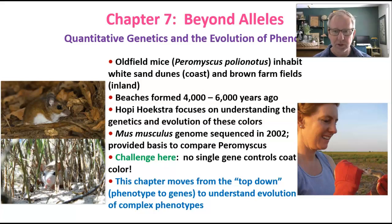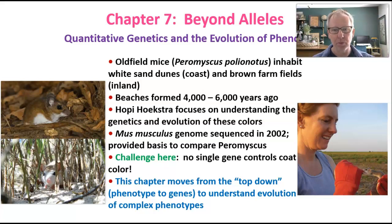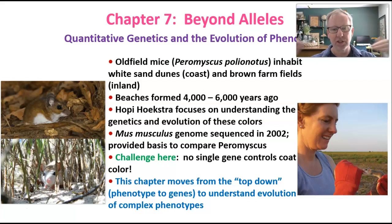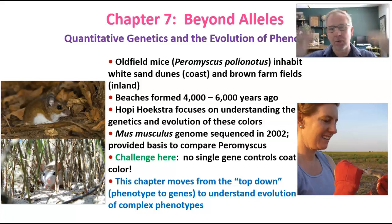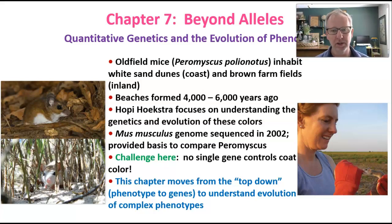This chapter takes a top-down approach. It begins with a phenotype — the observation of something like coat color — and moves down to understand what genes affect that phenotype. It's a top-down approach from phenotype down to the genes that are controlling it.